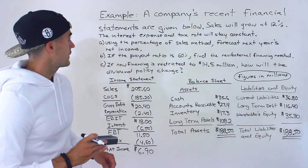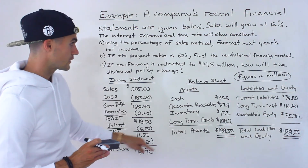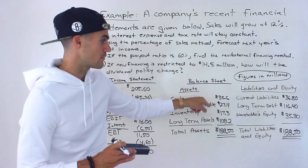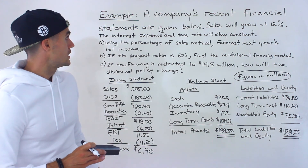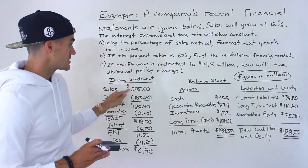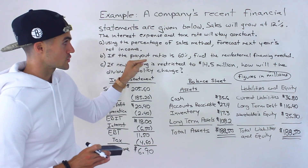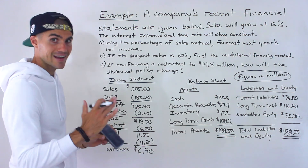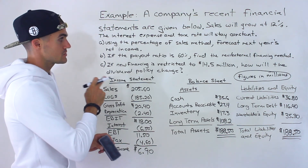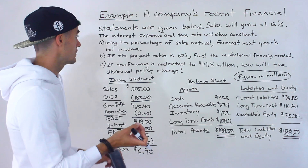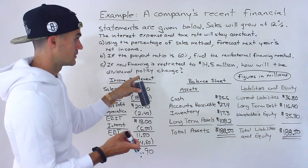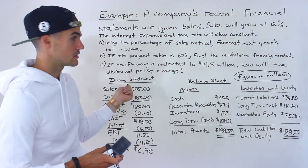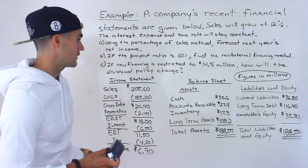A company's recent financial statements are given below. We have the income statement, the balance sheet — all these figures are in millions. So 35.6 would be $35,600,000, but we'll keep the decimal values. Sales are going to grow at 12%, and we're told the interest expense and tax rate are staying constant. Part A: forecast next year's net income. Part B: if the payout ratio is 60%, find the external financing needed. Part C: if new financing is restricted to $14.5 million, how will the dividend policy change?